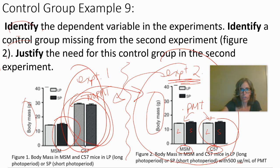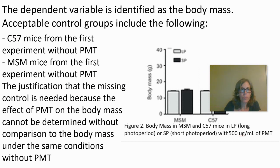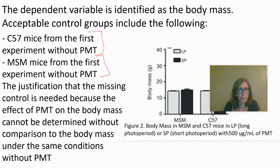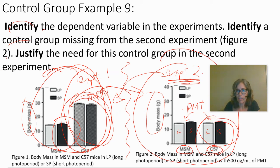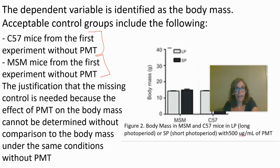Acceptable missing control groups are the C57 mice without PMT or the MSM mice without PMT — ideally both — run concurrently with experiment two. The justification is that the effect of PMT on body mass cannot be determined without comparing to body mass under the same conditions without PMT. You can't attribute a smaller body mass to PMT unless you have something to compare it to.